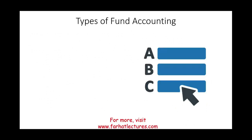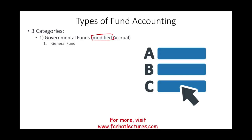There are three categories of funds. The first is governmental funds, which uses modified accrual accounting. Under governmental funds, there are five types: the general fund, special revenue funds, capital project funds, debt service funds, and permanent funds. We will define each one so you can answer multiple choice questions about their definitions and applicable transactions.